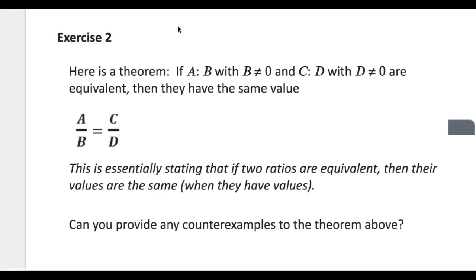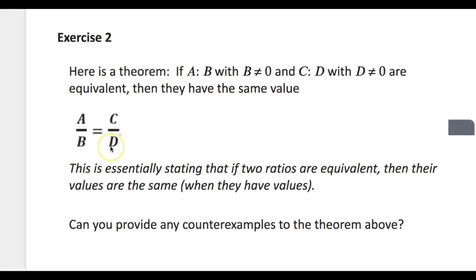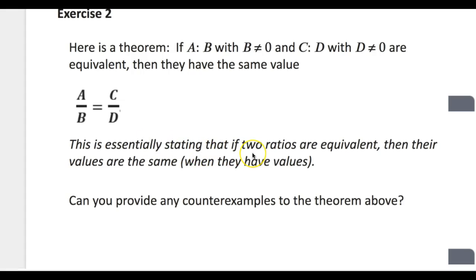Here's the theorem: if A to B (where B cannot equal 0) and C to D (where D does not equal 0) are equivalent, then they have the same value. So if A to B is equivalent to C to D, then the fractions A over B and C over D are equivalent. This essentially states that if two ratios are equivalent, then their values are the same, when they have values. Their values refer to their fraction form.